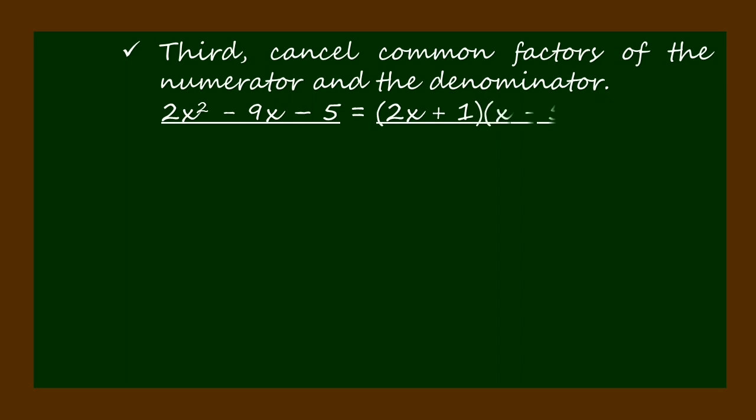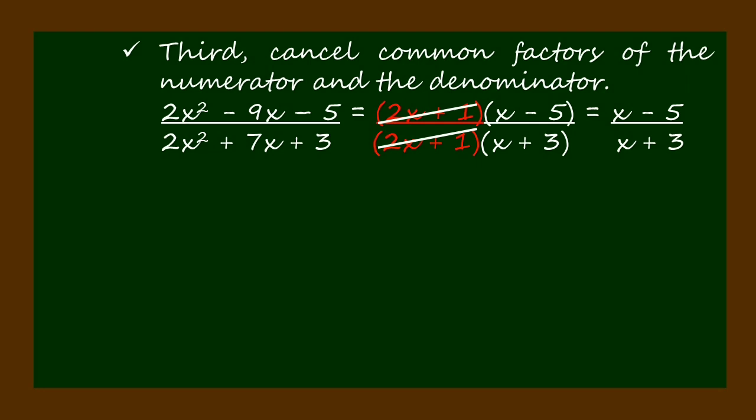First, factor the numerator and the denominator: (2x² - 9x - 5)/(2x² + 7x + 3) = (2x + 1)(x - 5)/(2x + 1)(x + 3).